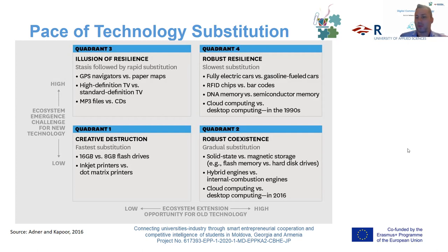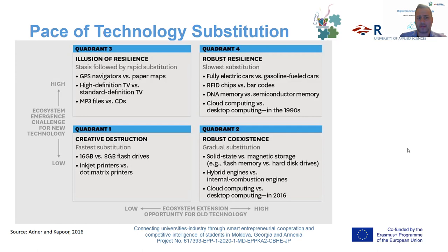Looking into those four quadrants — there are four quadrants according to the model of Adner and Kepper from 2016 — we can see clearly that quadrant one, called 'creative destruction,' describes the so-called fastest substitution. This means, for example, the shift from 8 gigabyte to 16 gigabyte flash drives, or inkjet printers versus dot matrix printers — technology which has jumped into our business and daily life very quickly.